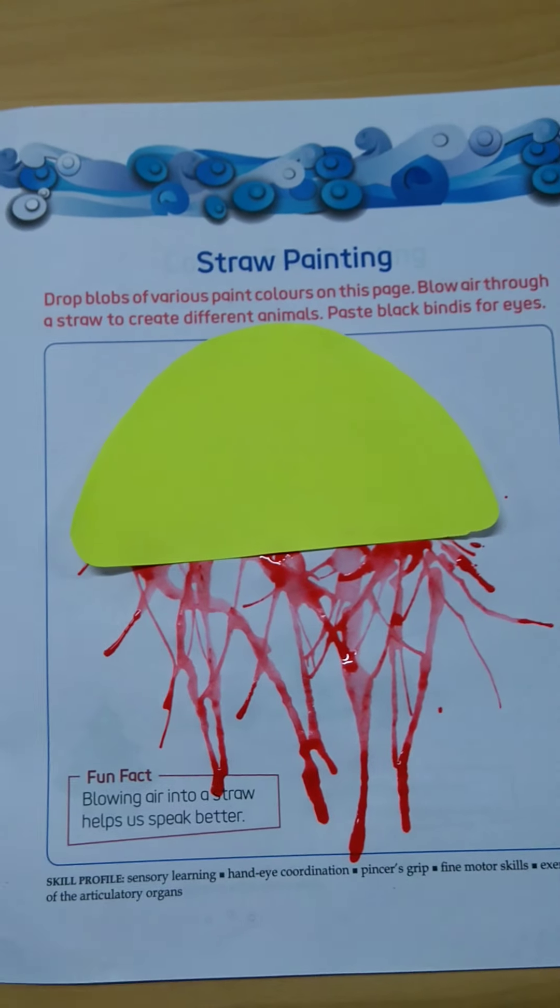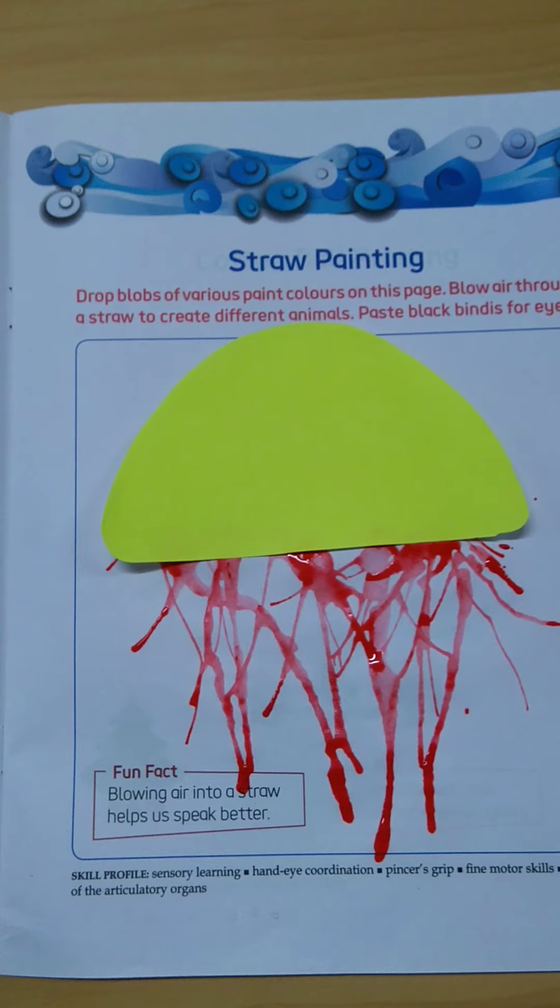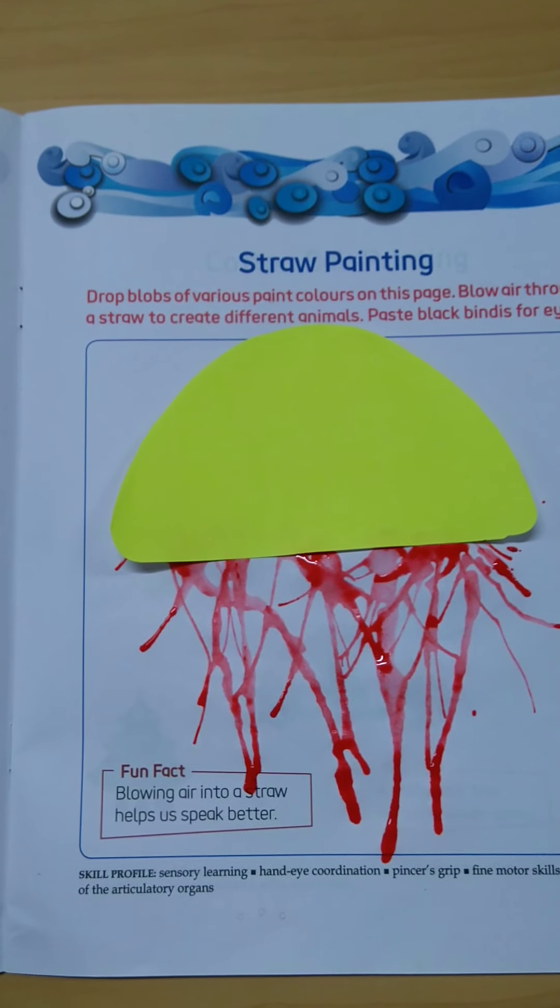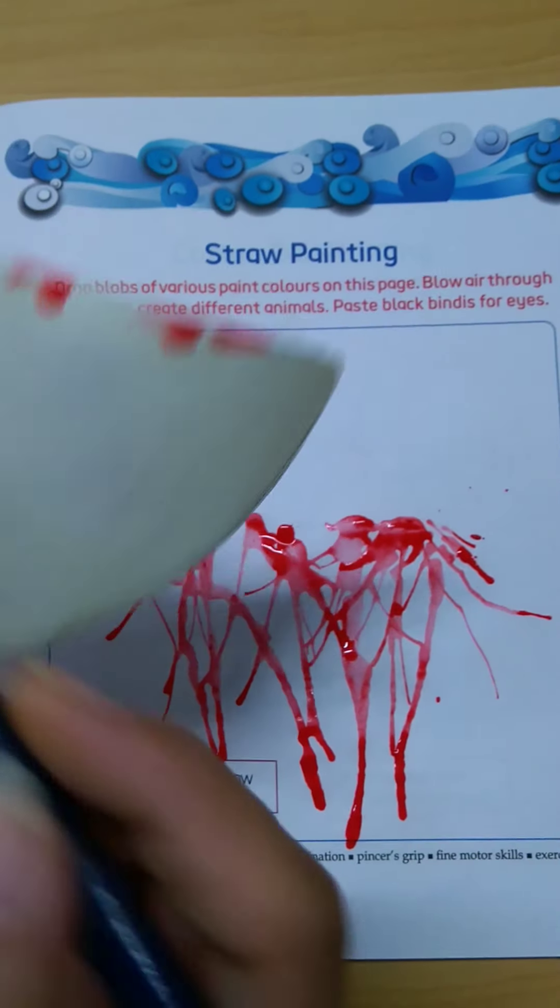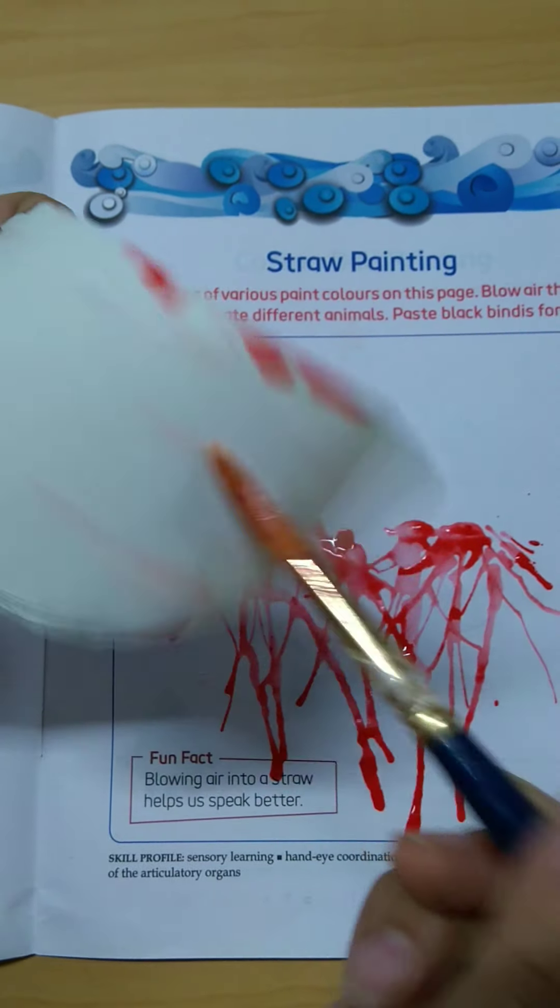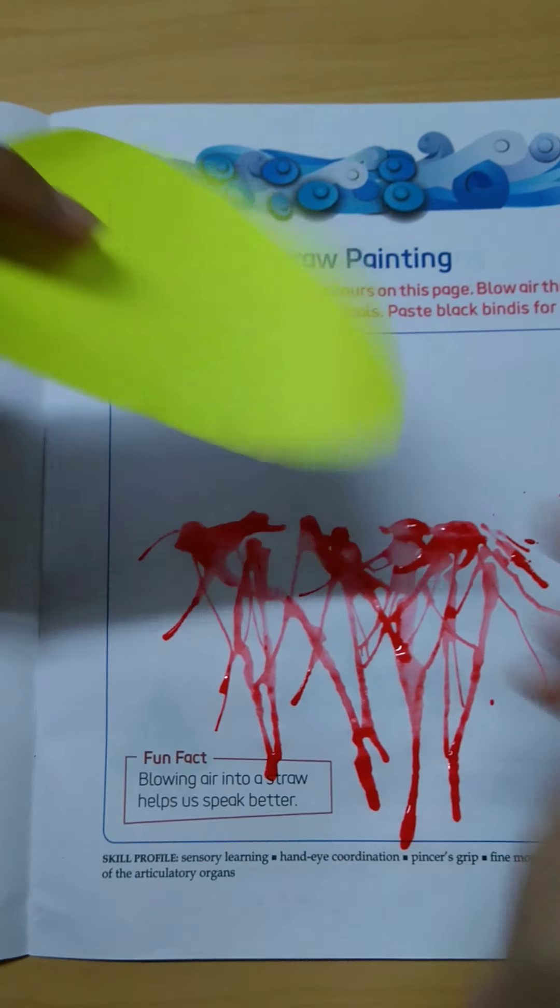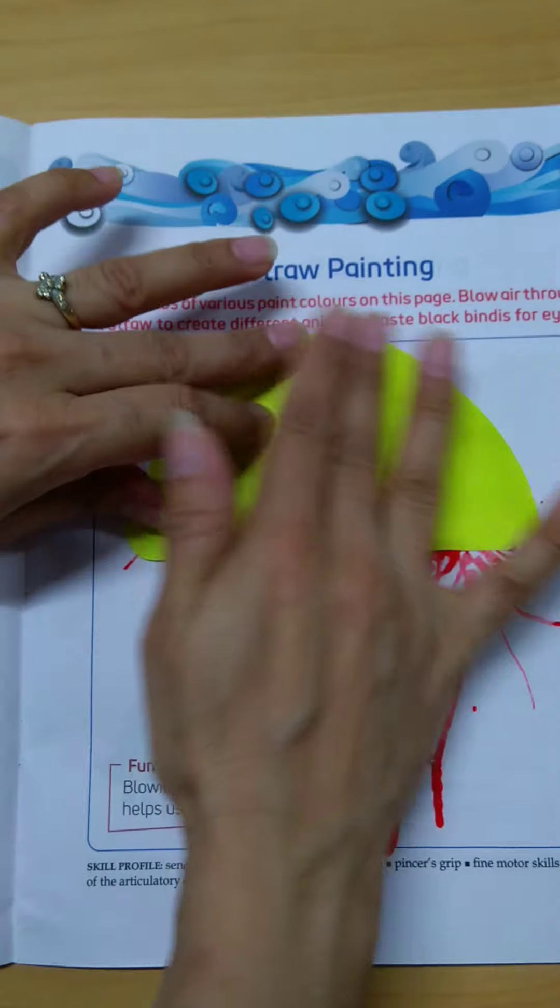Now, I will paste it with the help of favicol. Apply favicol on the back of the half circle. Then paste it here. Like this.